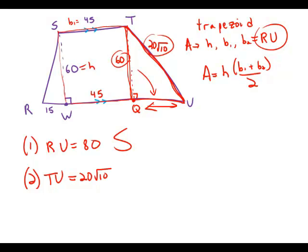Well, that's significant because if you notice, RU is made of three pieces. It's made of RW plus WQ plus QU.